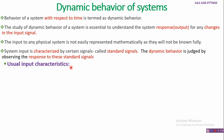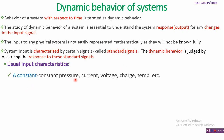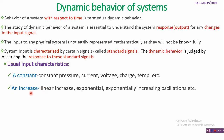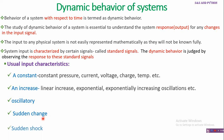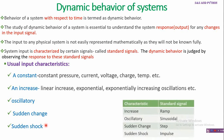What are the usual input characteristics identified as crucial for studying dynamic behavior? The input may be a constant value, or it may have a linear increase, an exponential increase, or an exponentially increasing oscillation. It may be oscillatory, taking both positive and negative magnitudes. There may be a sudden change in the level of the input signal, or a sudden shock — meaning a large change in the input signal occurring within a very short time duration.